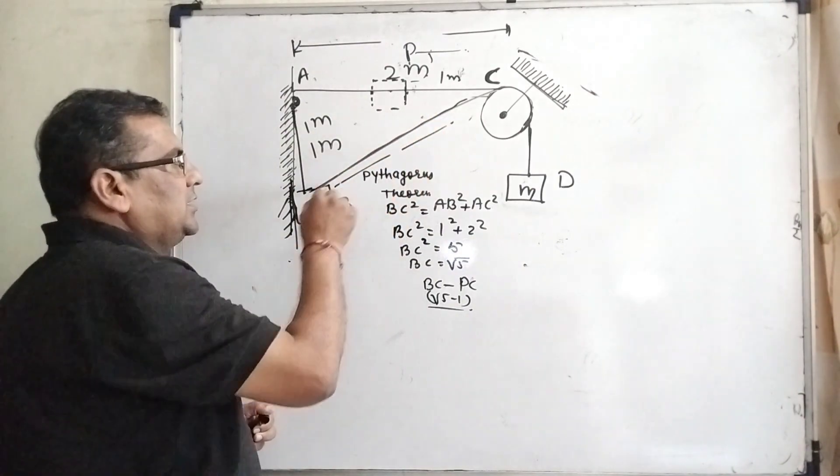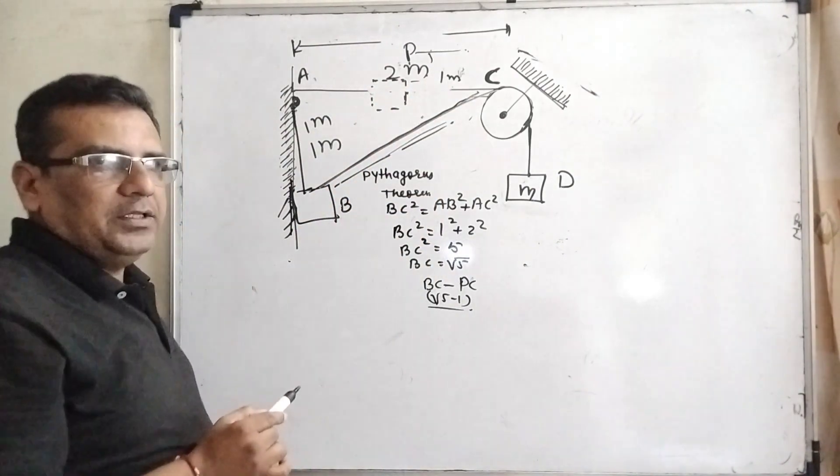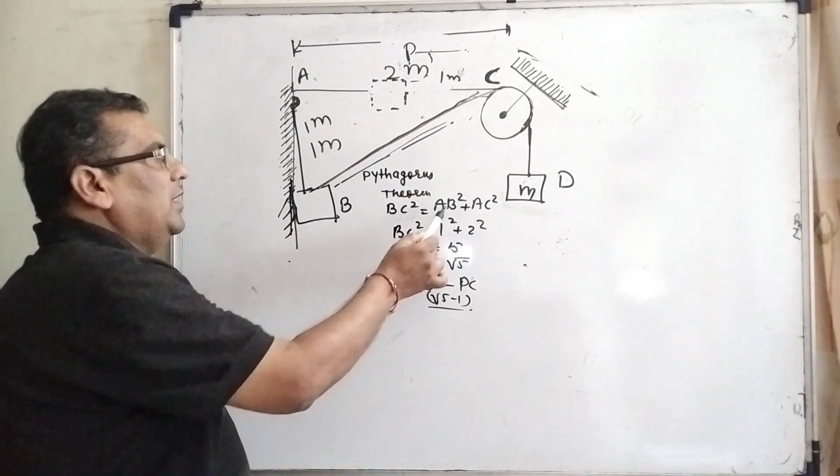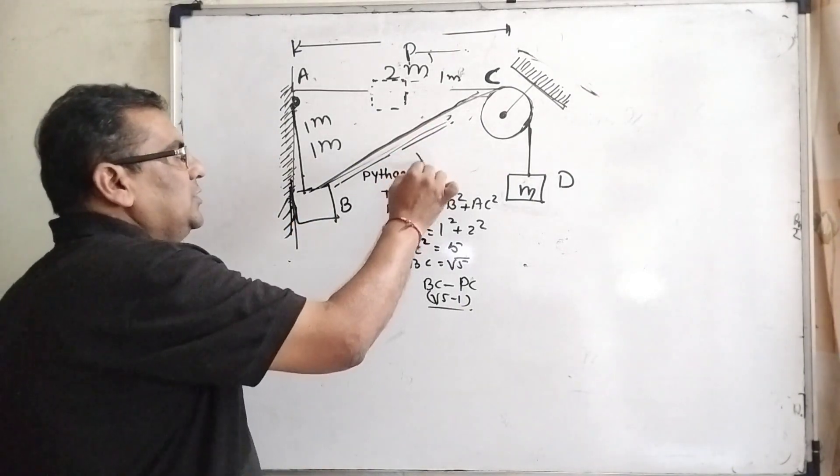Therefore, we have to find out this distance by using Pythagoras theorem. You can see that BC square equals AB square plus AC square, so we get this distance is root 5.